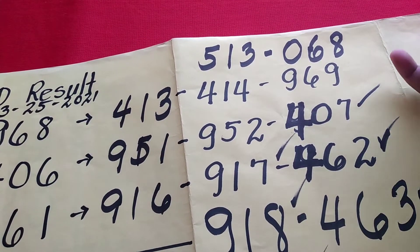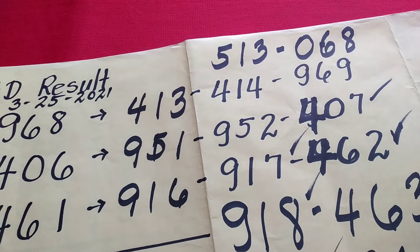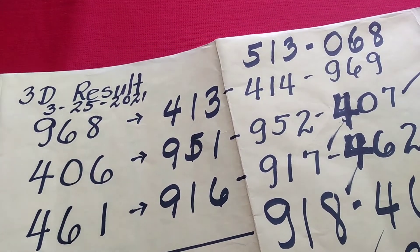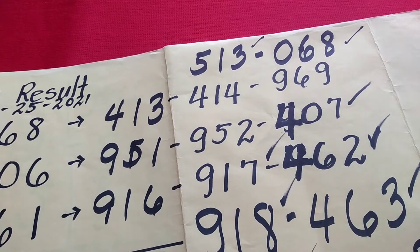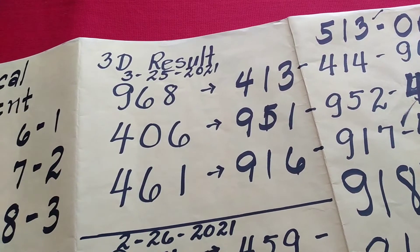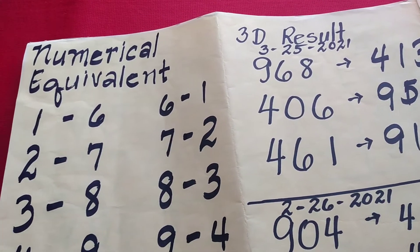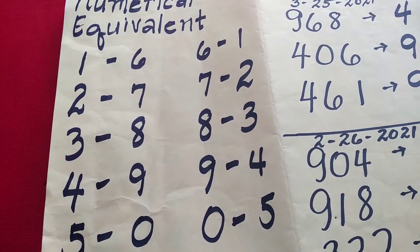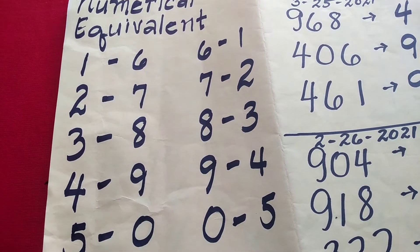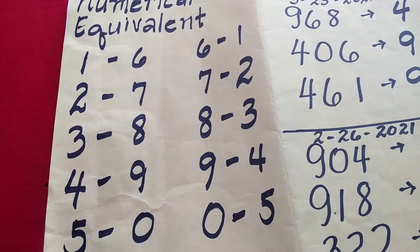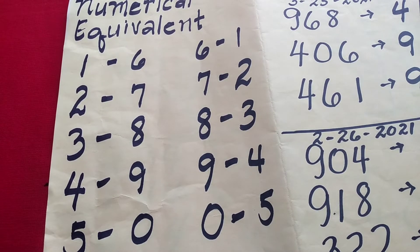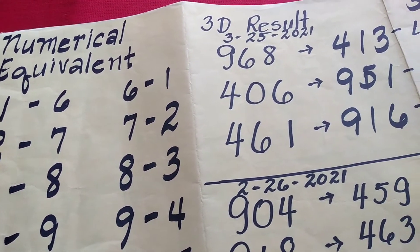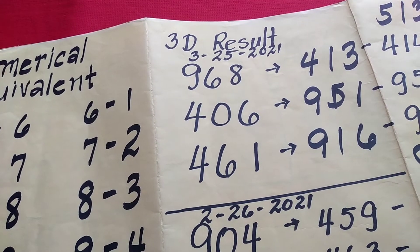Yung lumabas kahapon, yung equivalent ng 9, 6, 8 is 4, 1, 3. So baka ito lumabas. Ito naman ang numerical equivalent. Ang 9, 6, 8 equivalent ay 4, 1, 3. Ang 4, 0, 6 ay 9, 5, 1. Ang 4, 6, 1 ay 9, 1, 6.